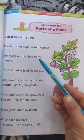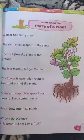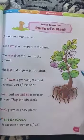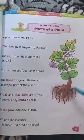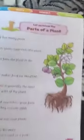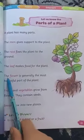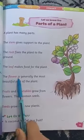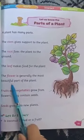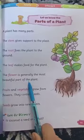The root fixes the plant to the ground. The leaf makes food for the plant. The flower is generally the most beautiful part of the plant.